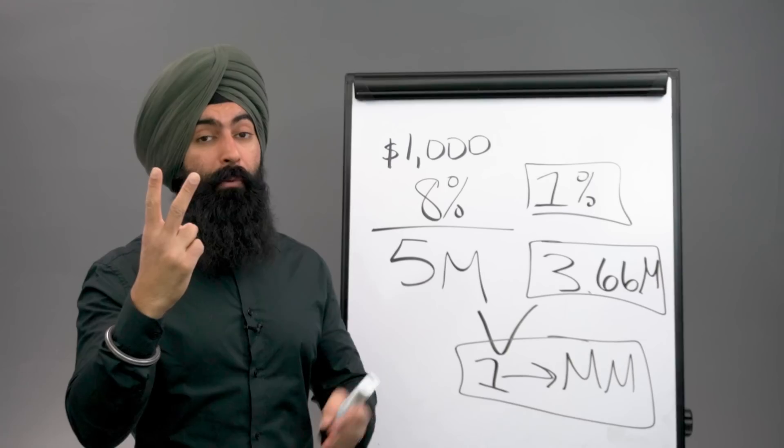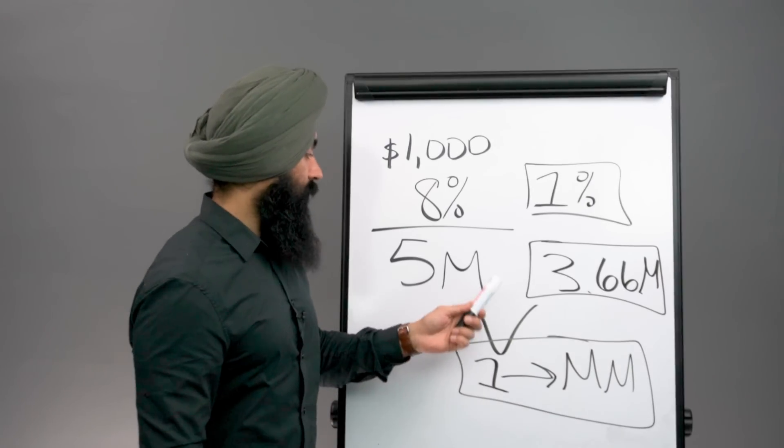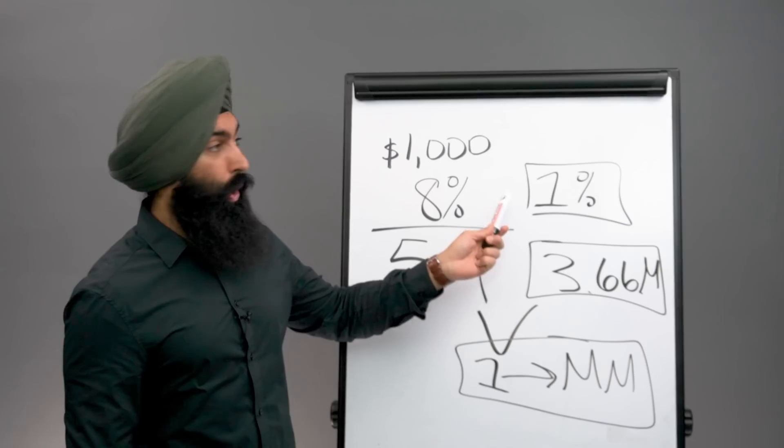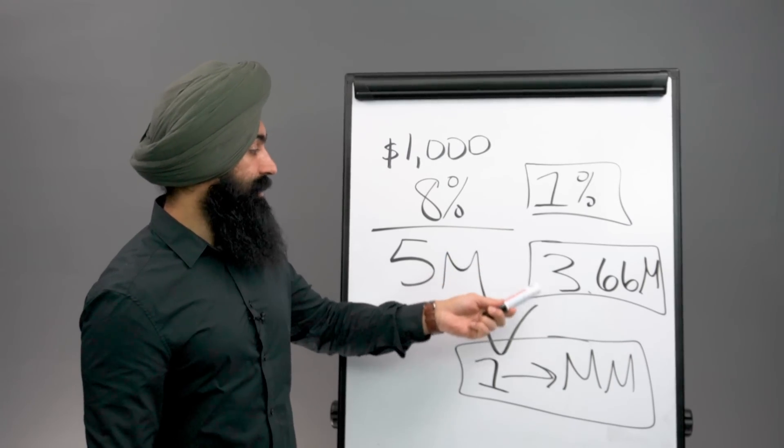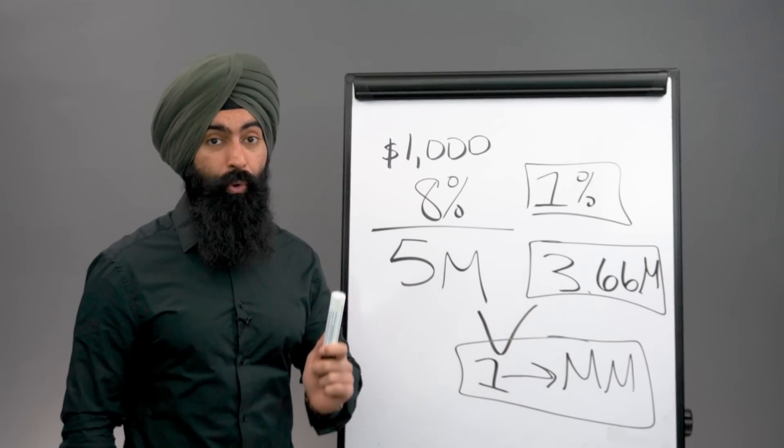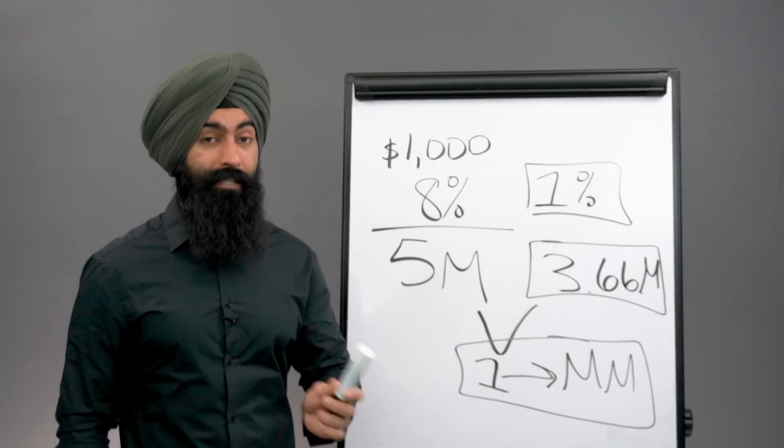This is why most people don't know what their fees are, because most money managers don't want you to know what the fees are. And second, most people have no idea what these fees are costing them. This is just a 1% fee. If you're paying a 1.5% or 1.8% fee, well, that's going to eat up even more of your future wealth. This is why it's so important for you to take a look at what that expense ratio is.